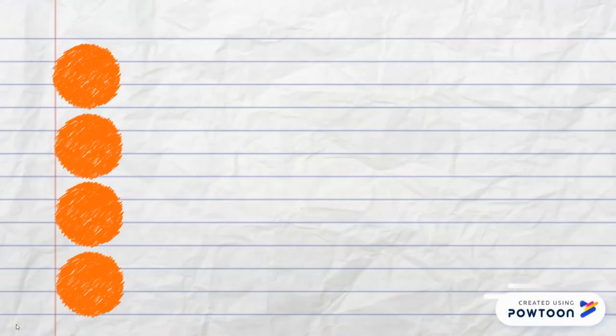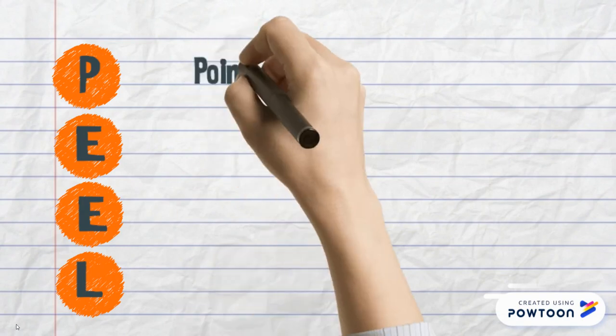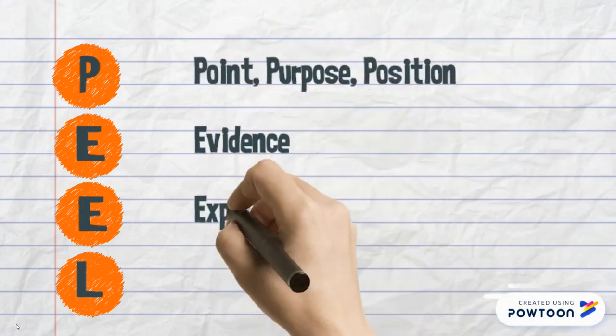PEEL is an acronym. It starts with P-E-E-L. P is your point, purpose, position. E is your evidence, E is explanation, and then L is linked back to the point.